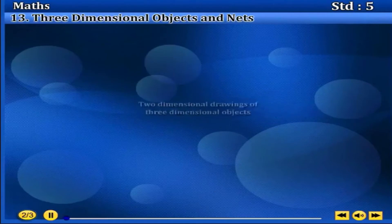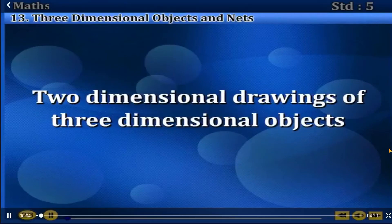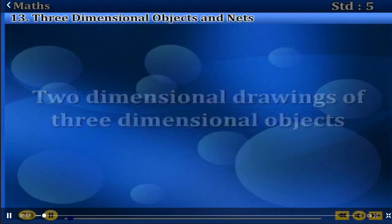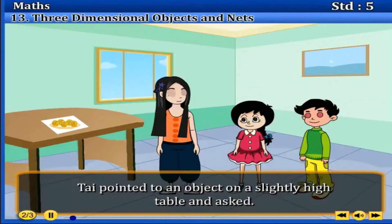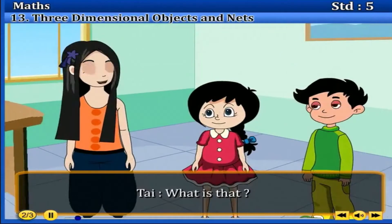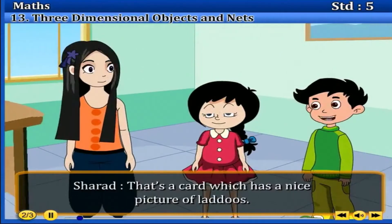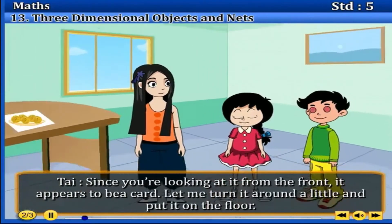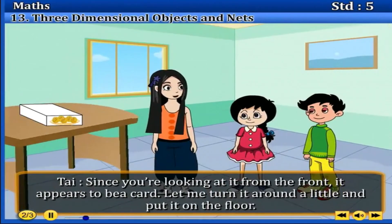Explanation: 2-Dimensional Drawings of 3-Dimensional Objects. Tai pointed to an object on a slightly high table and asked, 'What is that?' Sharad replied, 'That's a card which has a nice picture of a lotus.' Tai said, 'Since you are looking at it from the front, it appears to be a card. Let me turn it around a little and put it on the floor.'